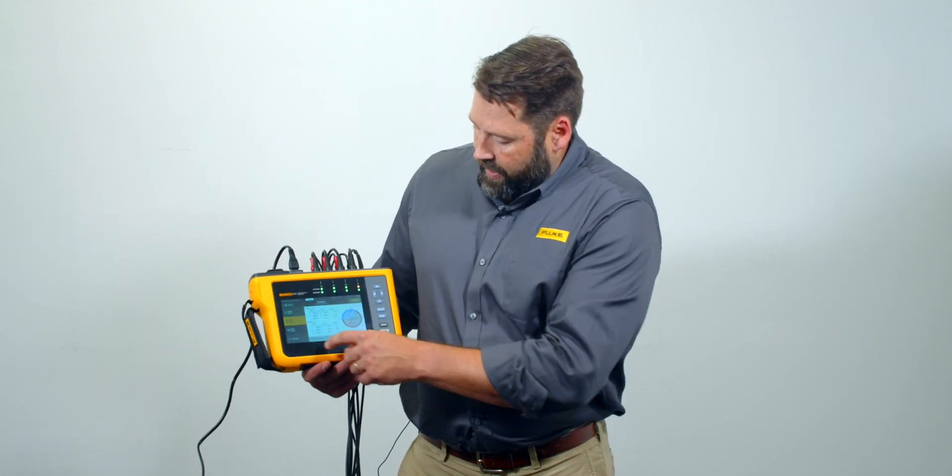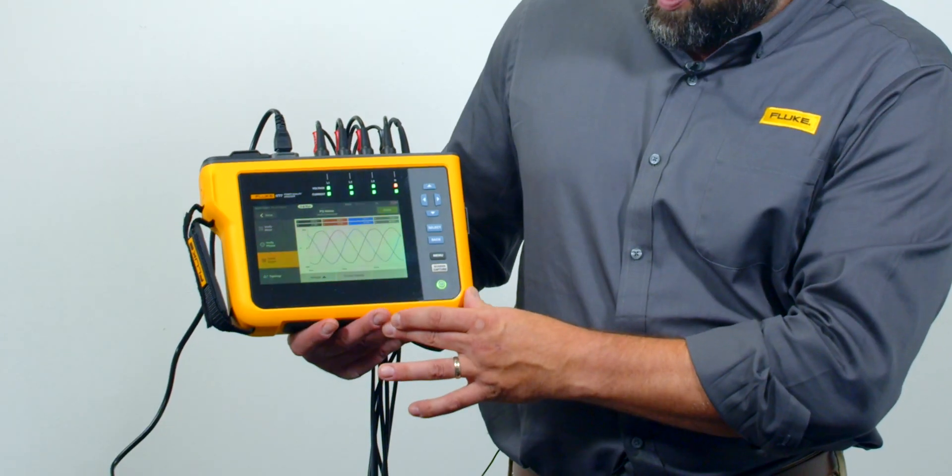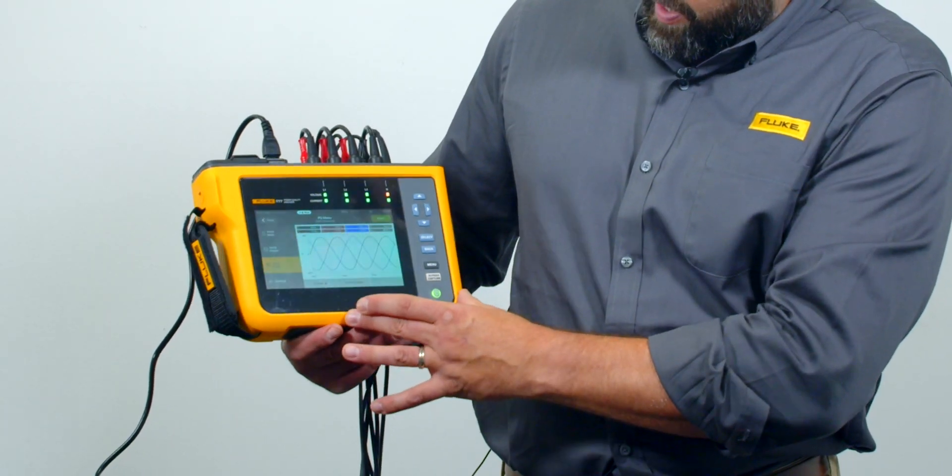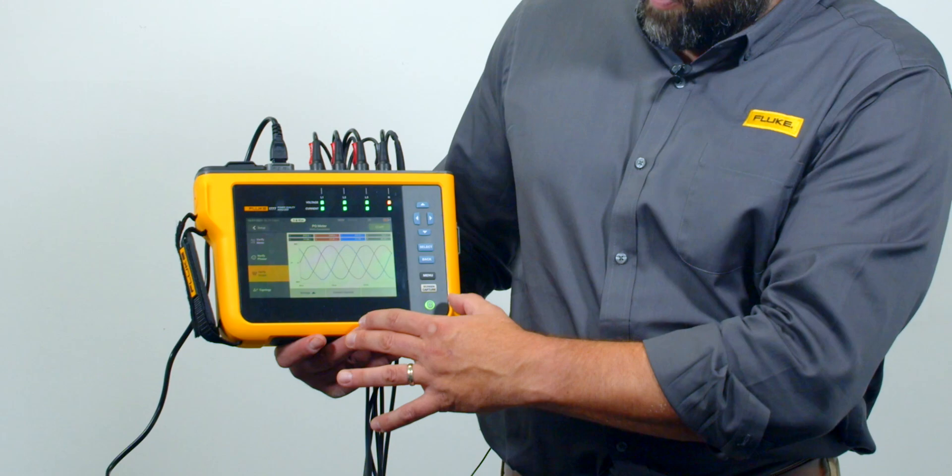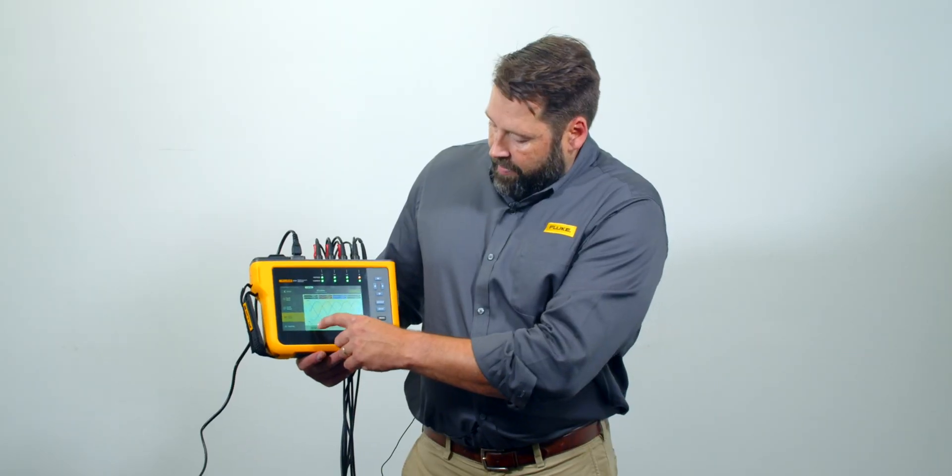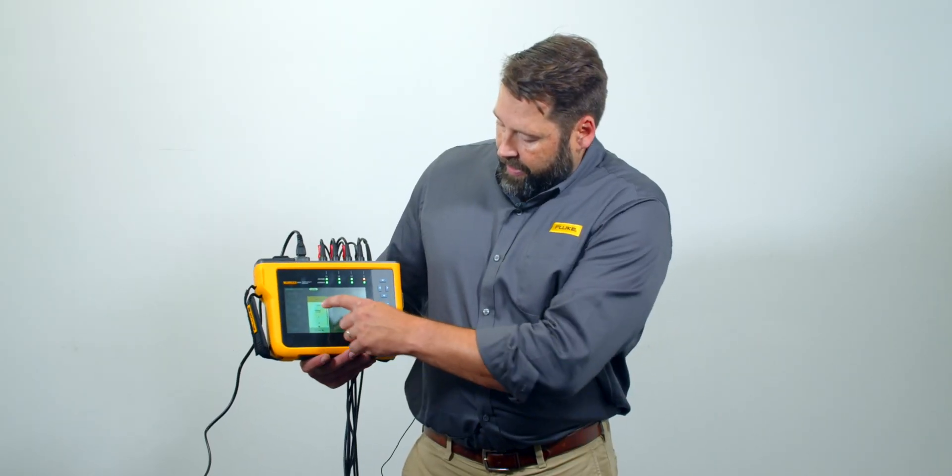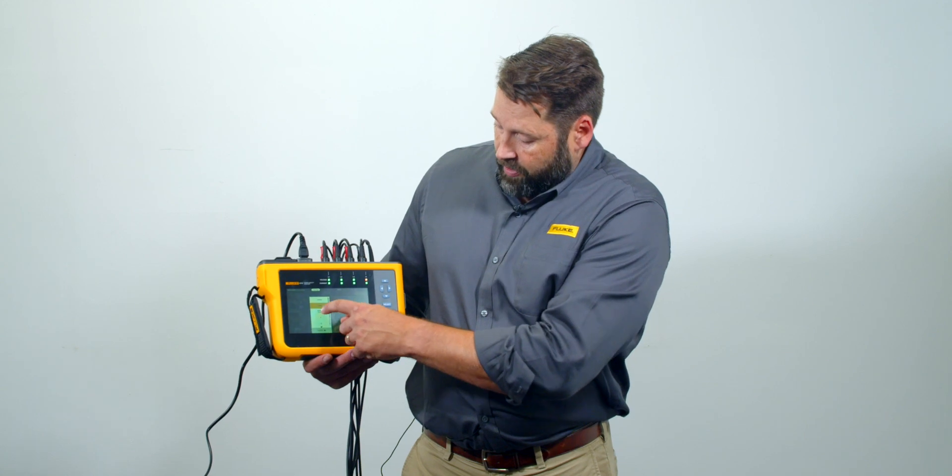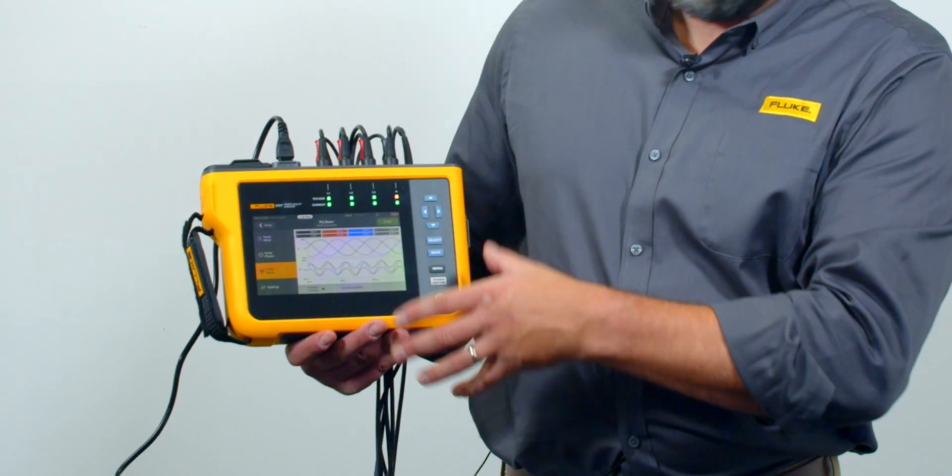I can also look at this in scope meter mode. So I'm right now looking at voltage across all three phases. I have the ability to look at just current or I can look at voltage and current at the same time on a nice split screen.